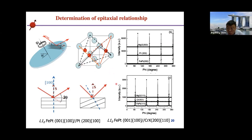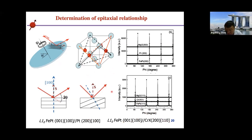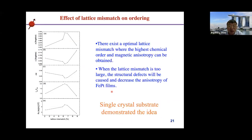Through this analysis, we confirm that the chromium [100] direction corresponds to the FePt [110] direction, and the FePt [100] direction corresponds to the chromium [110] direction. This confirms the epitaxial growth through XRD phi-scan measurements.